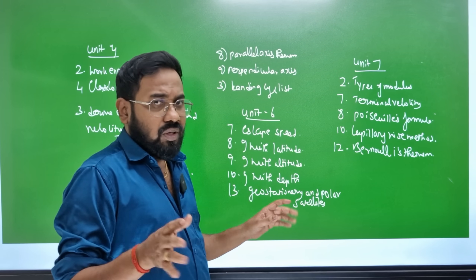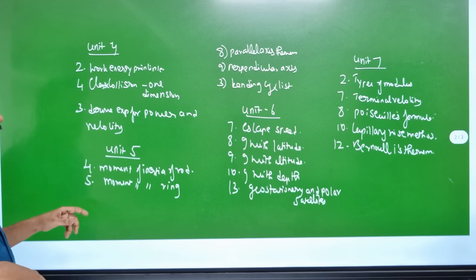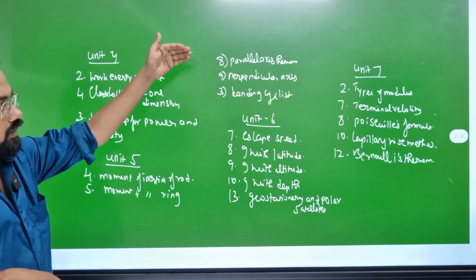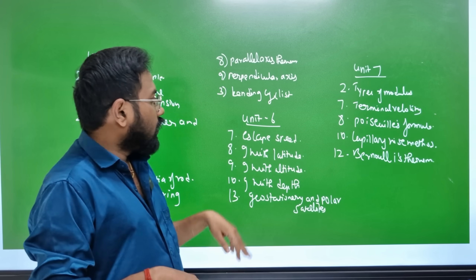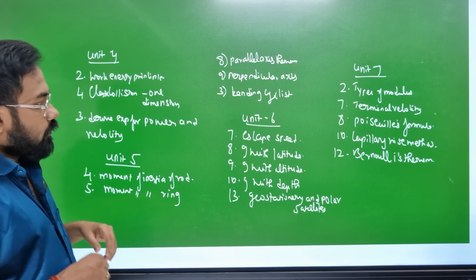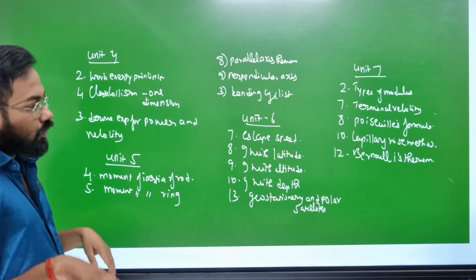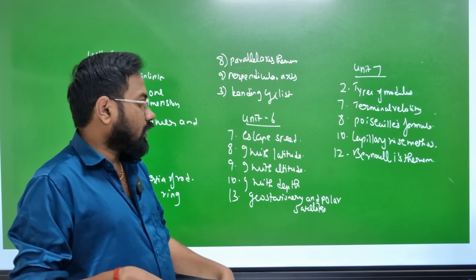Unit 6 covers Escape Speed, G with latitude, G with altitude, G with depth, and Geostationary and Polar satellites.